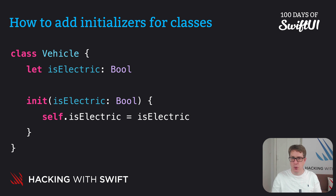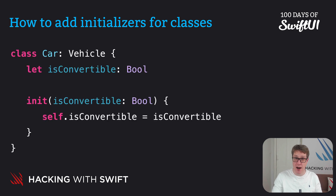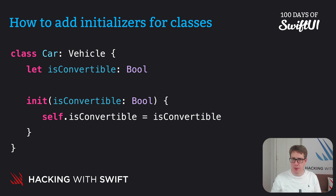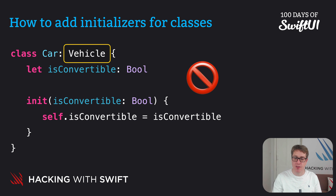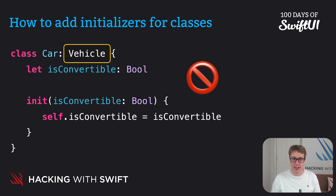Now let's say you want to make a new class called Car inheriting from this Vehicle class. You might start out writing something like this: class Car inherits from Vehicle, let isConvertible bool, init isConvertible bool, and then copy that into the property. But Swift will refuse to build this code — it'll say it can't work with that, because we've said this thing comes from the Vehicle class, and that needs to know whether it's an electric vehicle or not, and we haven't provided a value for that.